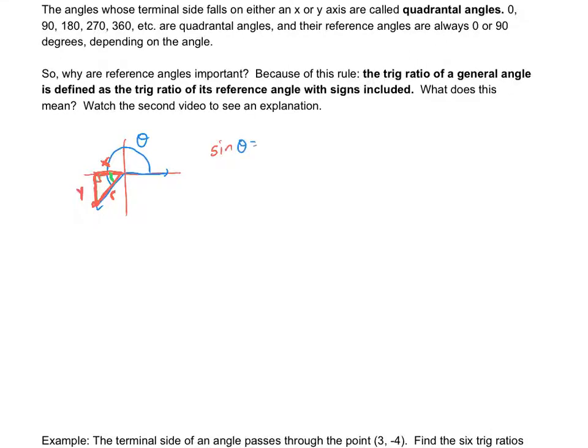So sine of theta here would be opposite, which is y, over hypotenuse, which is r. Now, you might be saying, how is that any different than the reference angle itself? Well, the thing is, this y value here could be a negative number. And when that y value is a negative number, since this r is like a distance to an origin, it's always positive, this would be a negative value for sine.